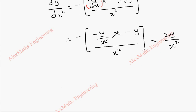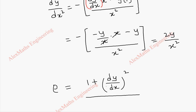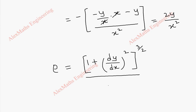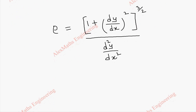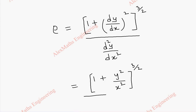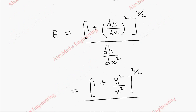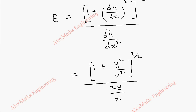Now coming to the radius of curvature formula. Rho equals 1 plus dy by dx whole squared, whole power 3 by 2, divided by the second derivative d square y by dx square. In place of dy by dx we have minus y by x. When we substitute, the numerator becomes 1 plus y square by x square, whole power 3 by 2, and the denominator is 2y by x square.